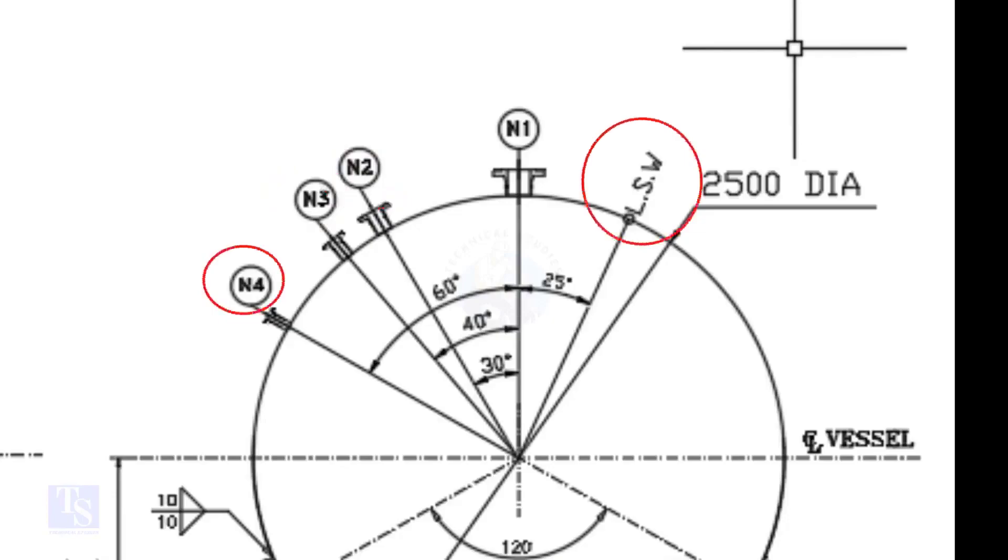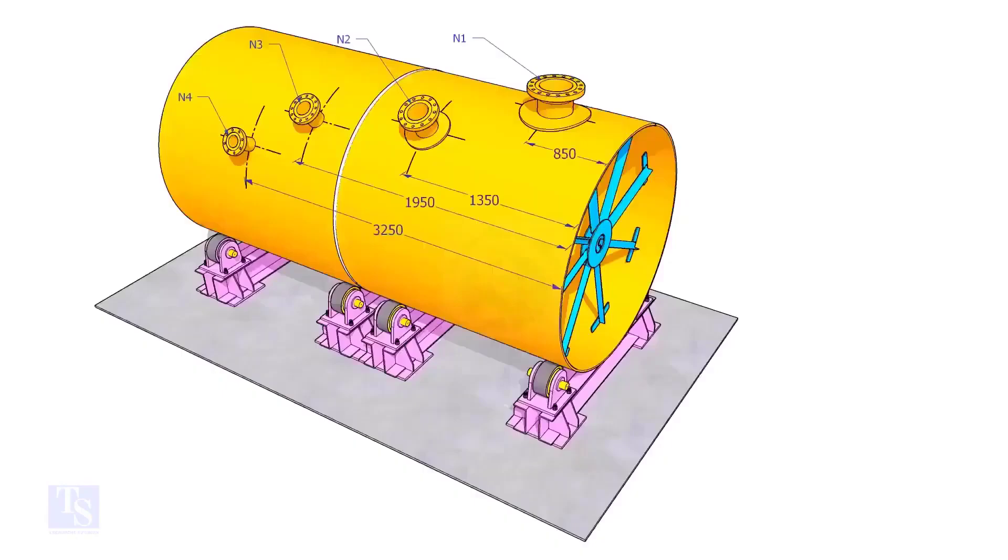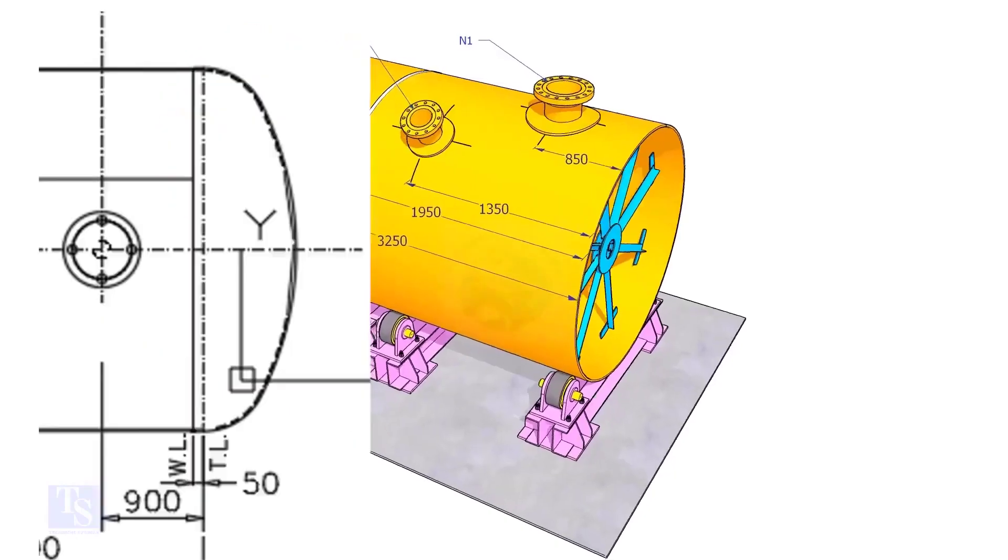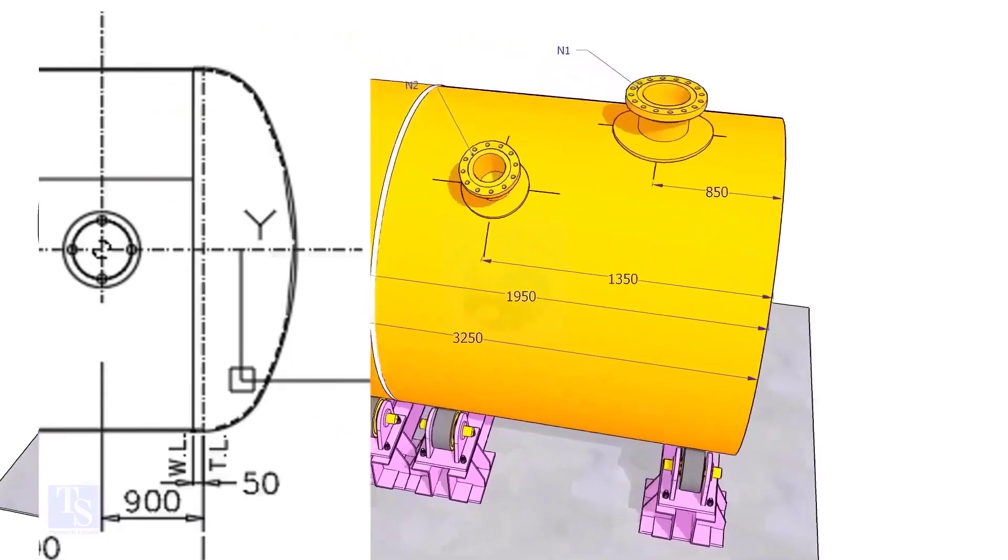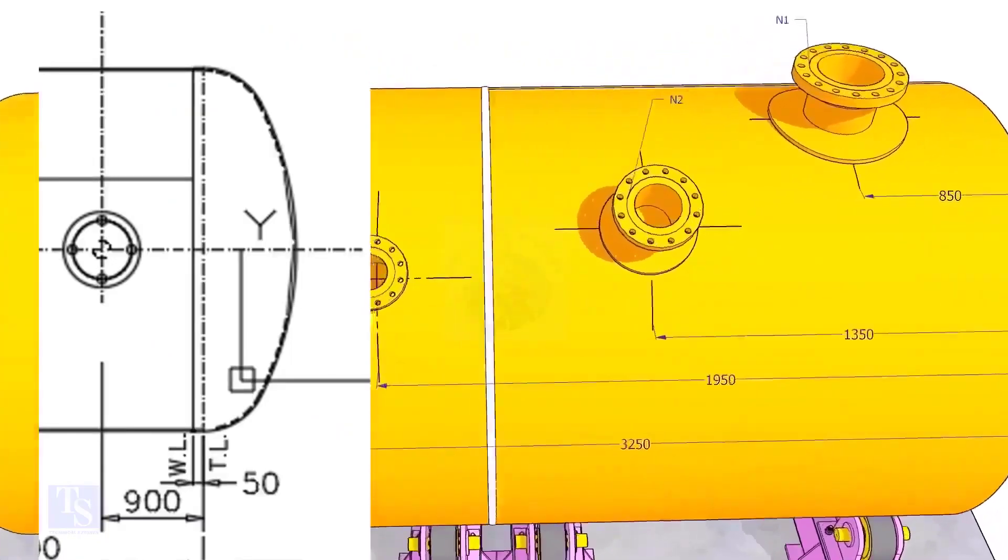Nozzle N1 is turned 25 degree from LSW. As the straight face 50mm is on the dish end, we need to subtract 50mm from the overall dimension.